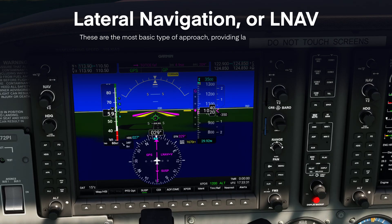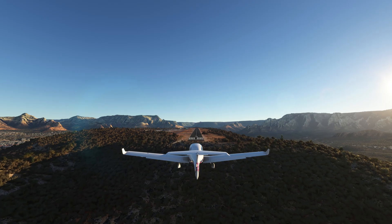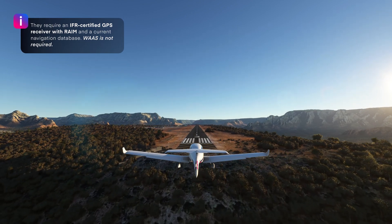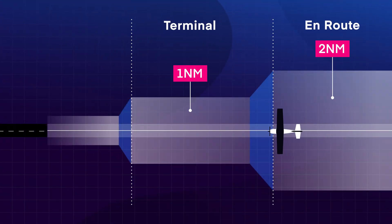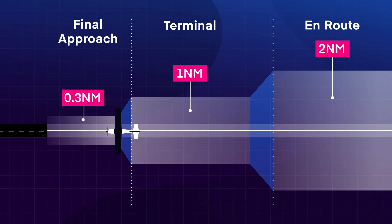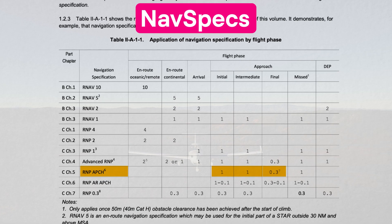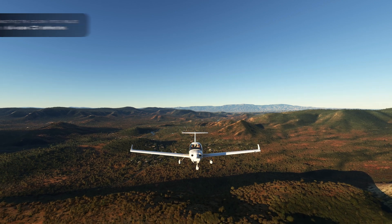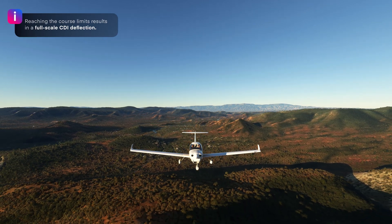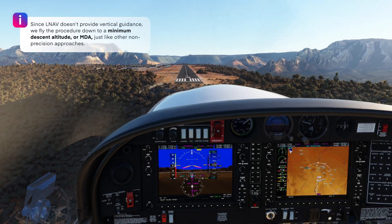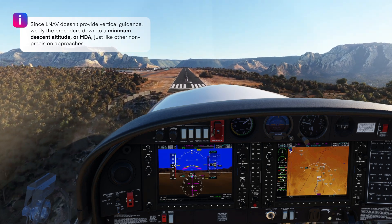LNAV approaches are the most basic type, providing lateral guidance only. To fly this procedure, we need an IFR-certified GPS receiver with RAIM and a current navigation database — WAAS is not required. The course width is one nautical mile left or right of course until two nautical miles from the final approach fix, where it narrows to 0.3 nautical miles — that's the RNP approach NAV spec. The width stays the same until the missed approach point, and reaching the course limits results in a full-scale CDI deflection. Since LNAV doesn't provide vertical guidance, we fly the procedure down to a minimum descent altitude or MDA, just like other non-precision approaches.